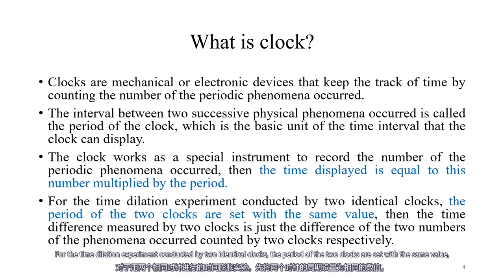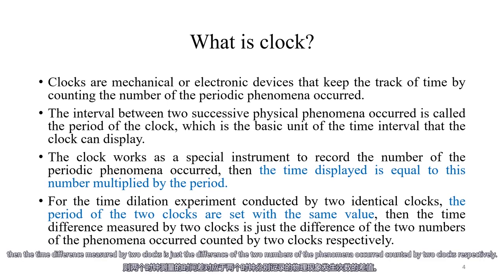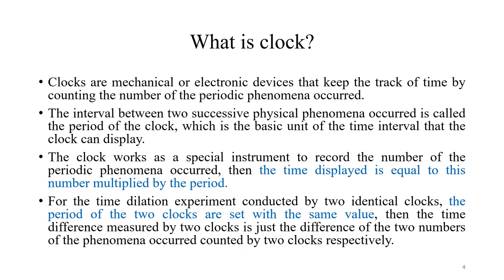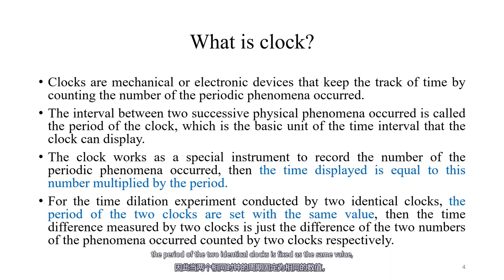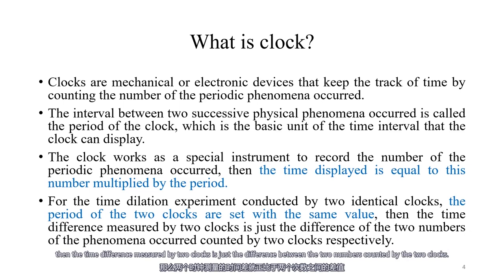The clock works as a special instrument to record the number of periodic phenomena that occur. The time interval equals this number multiplied by the period. For time dilation experiments conducted with two identical clocks, the periods of the two clocks are set to the same value. The time difference measured by two clocks is just the difference in the two numbers of phenomena counted by the two clocks respectively. In summary, all clocks are devices that count the number of physical phenomena. Time measured by a clock equals its period multiplied by the number counted by the clock.